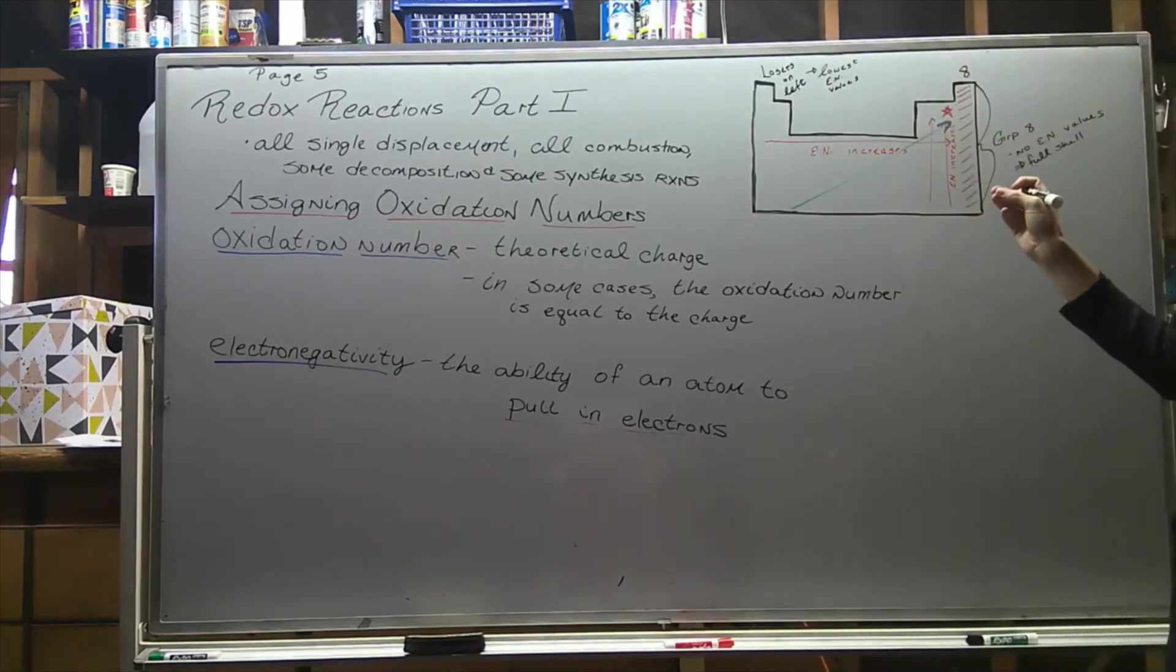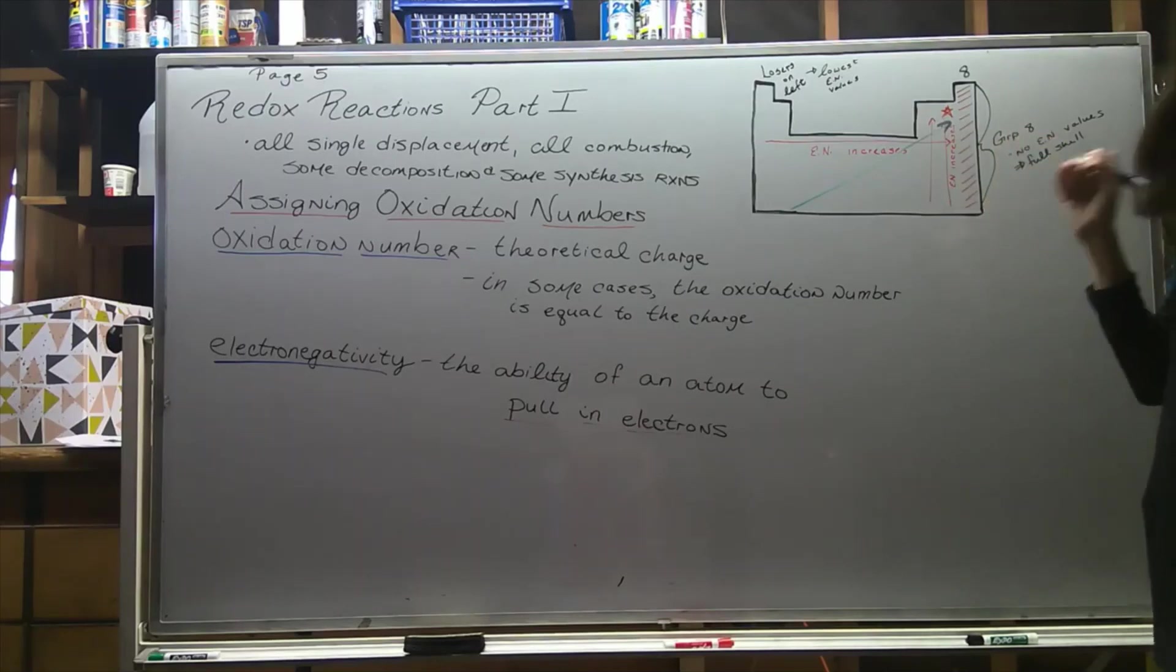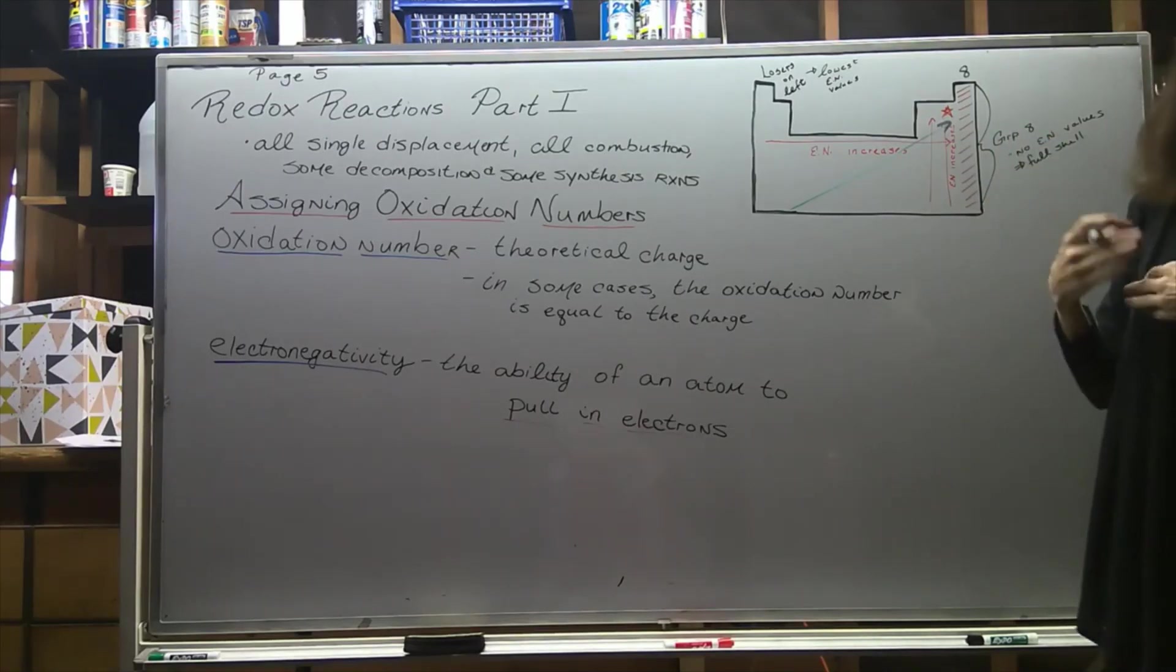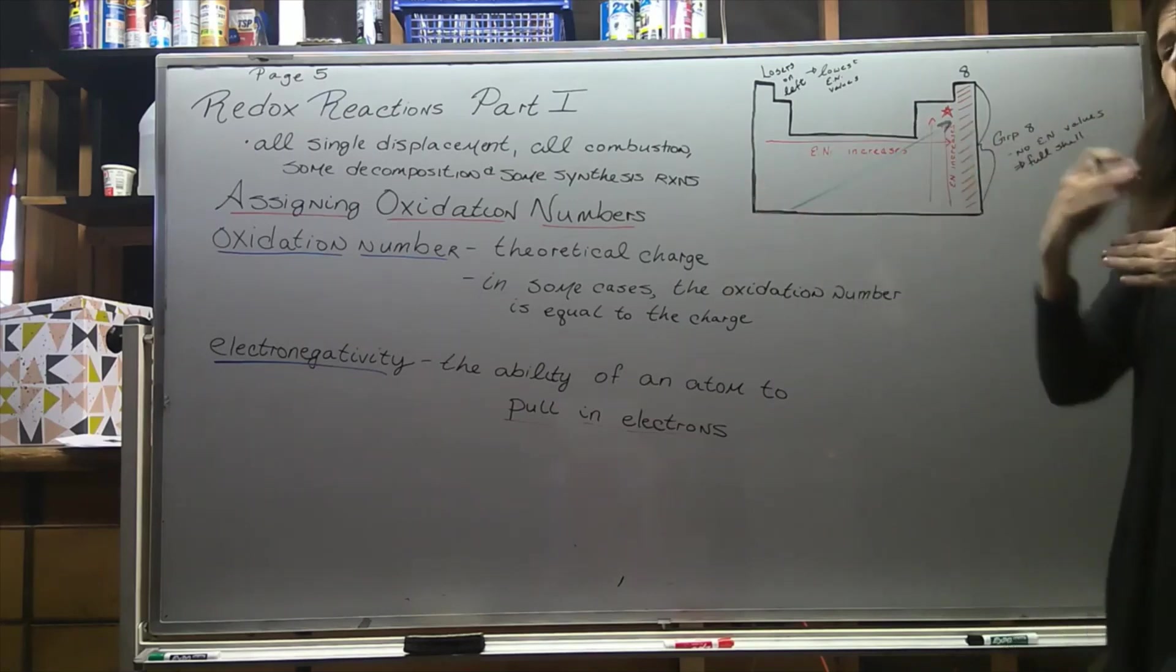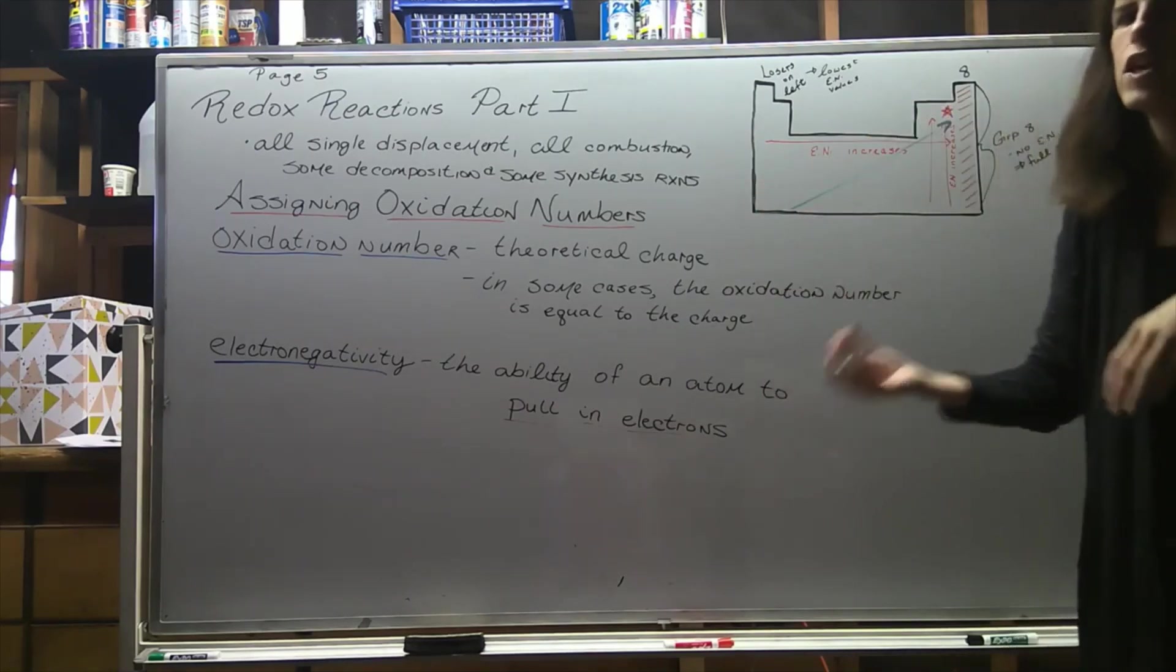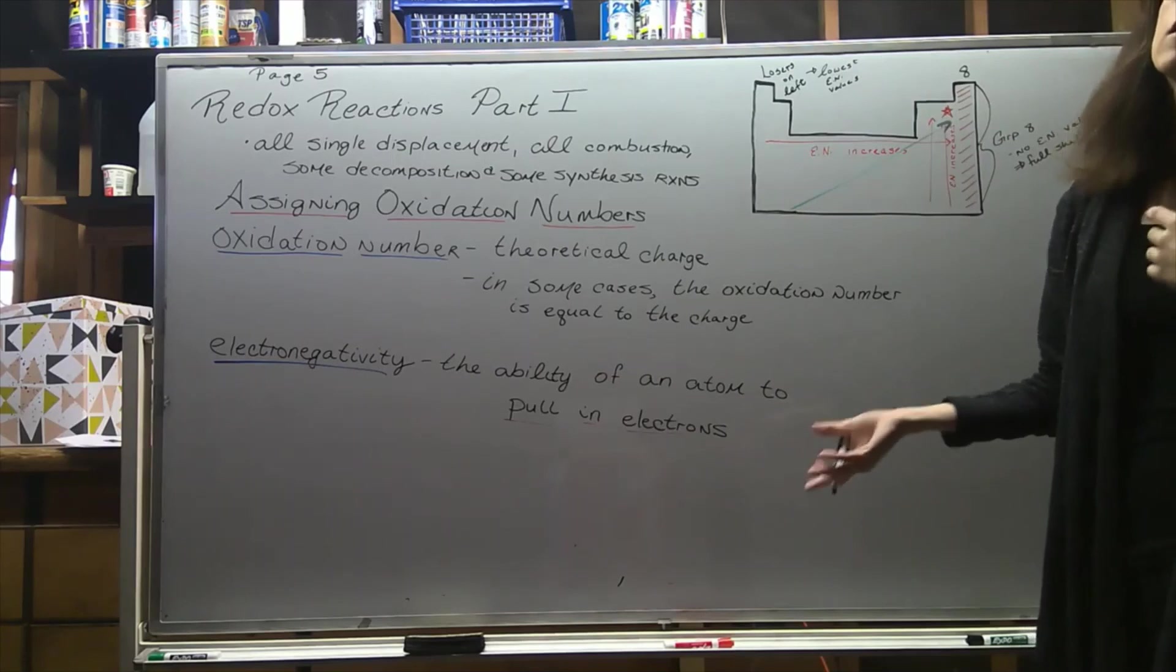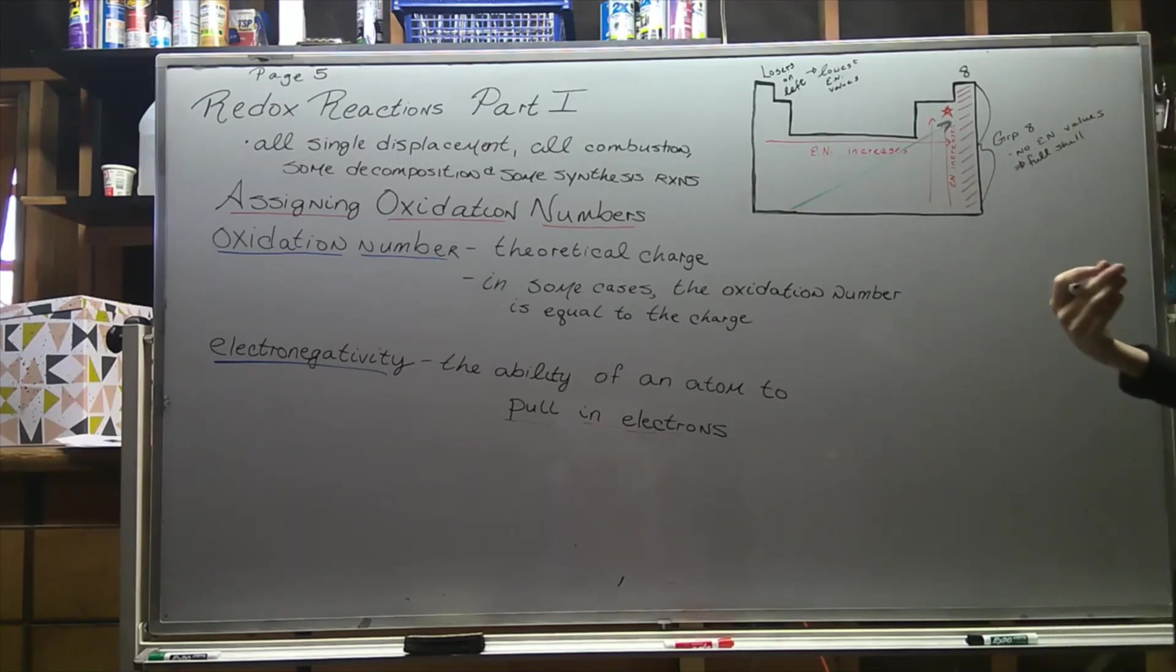One way to think about it: group seven tends to have pretty high electronegativity values, especially fluorine. It's so close, almost going to look like a noble gas, so it's the most motivated to pull electrons. Indeed, it can pull in electrons from anybody in the vicinity. Fluorine is that powerful in terms of electronegativity.